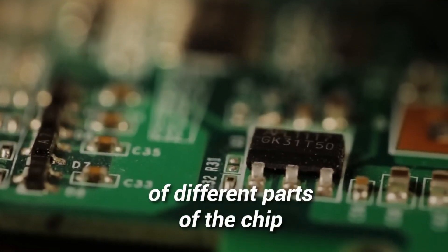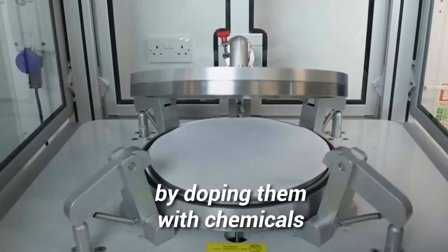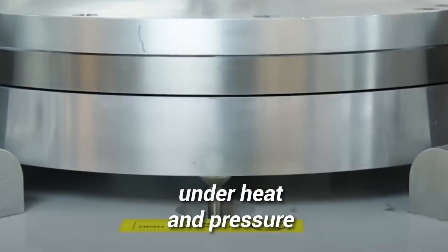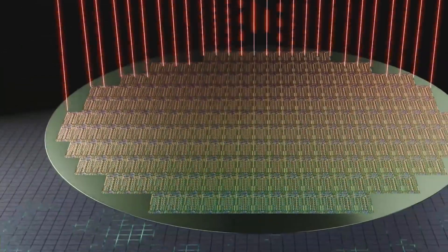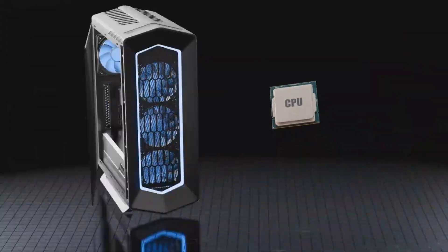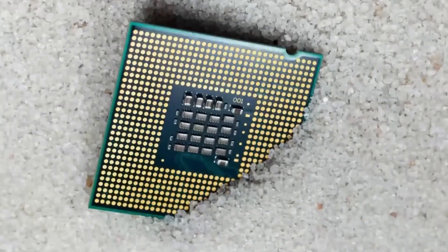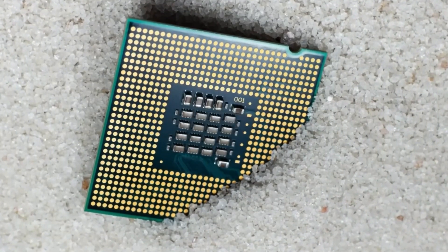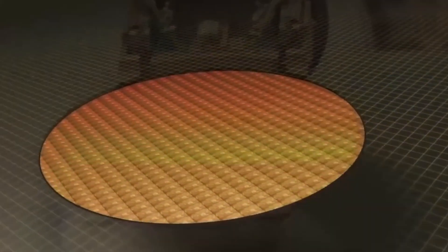Working at this microscopic scale poses a significant challenge for microchip manufacturers. When a transistor has a width of only one thousandth of a millimeter, the smallest particle of dust can cause a short circuit. A single particle landing in an area can destroy a chip. To prevent this, before workers enter the factory, they must put on protective suits.